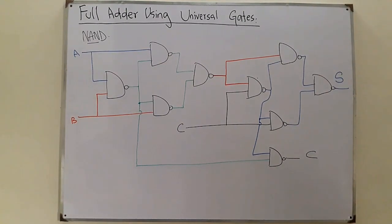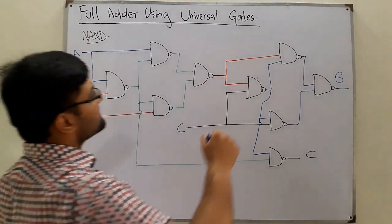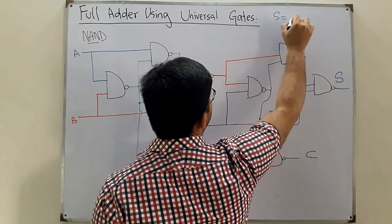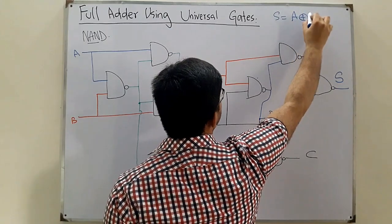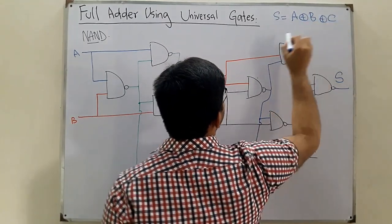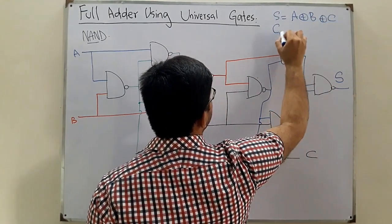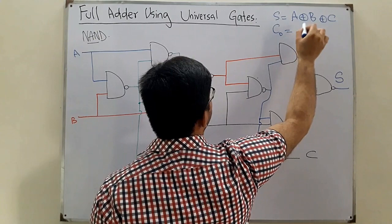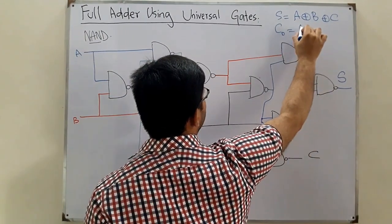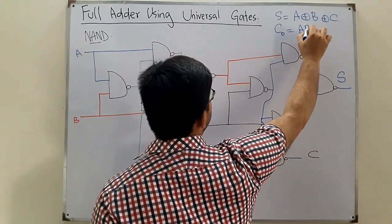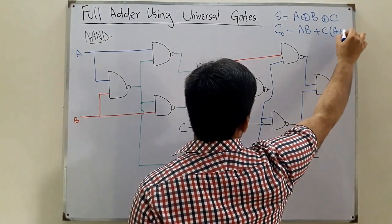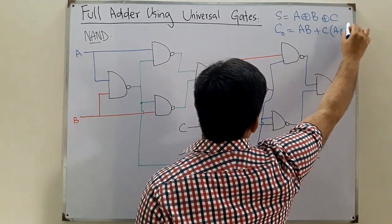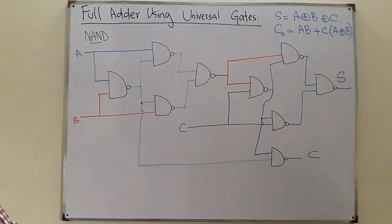Now we prove it is working correctly. The sum is A exclusive-OR B exclusive-OR C, and the carry output is A·B + C·(A exclusive-OR B). Yes, that is correct.